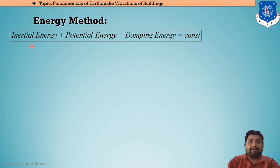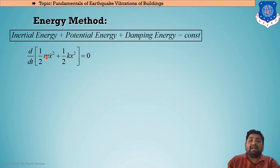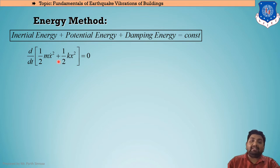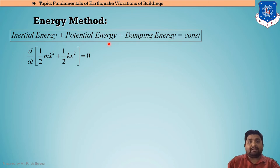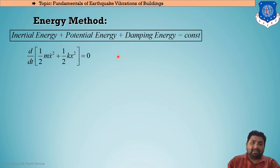Breaking it down: inertial energy is ½mẋ², which is kinetic energy (½mv², where v is velocity represented as ẋ here). Potential energy is ½kx², which is the energy stored in the spring with spring constant k and displacement x. Damping energy is neglected in this case.